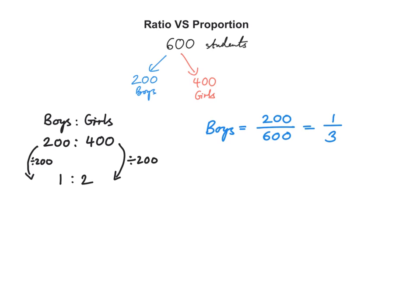What is the proportion of girls? The proportion of girls is just the number of girls out of the total. That's 400 over 600, which simplifies to 2 thirds by dividing the numerator and the denominator by 200.